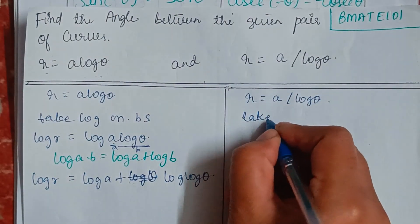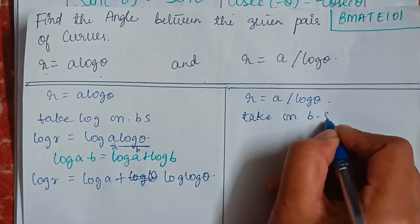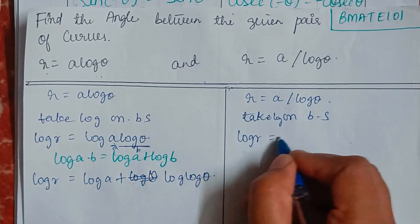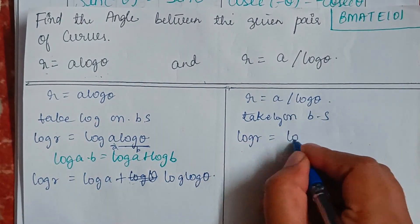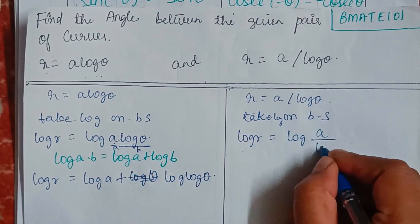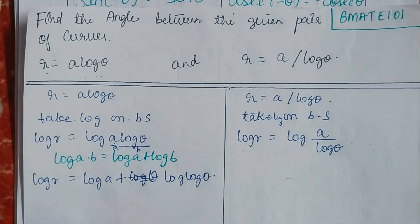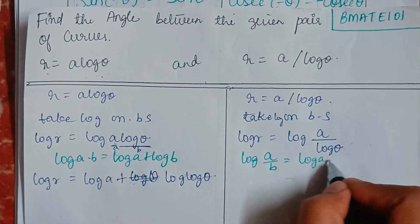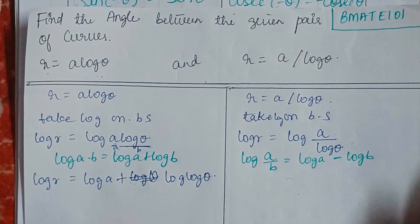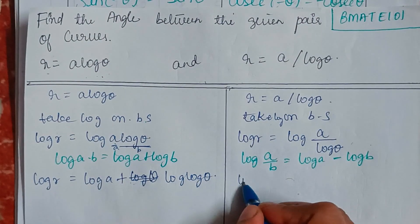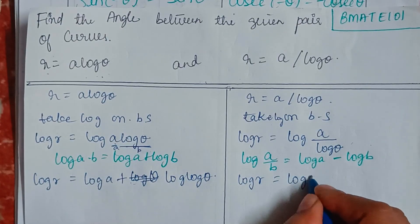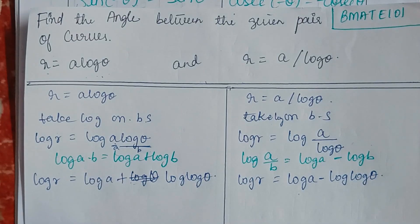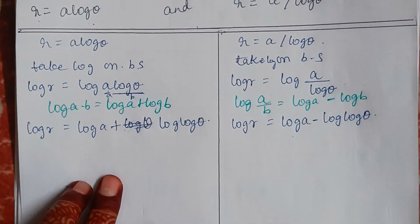For the second curve r = a / log θ, we also take log on both sides. So log r equals log(a / log θ). Using log(a/b) = log a − log b, it becomes log r equals log a minus log(log θ). No mistake and no confusion here.